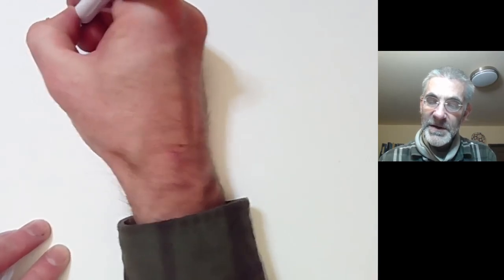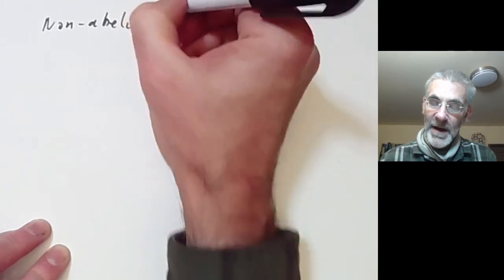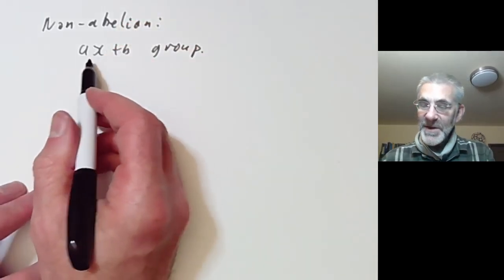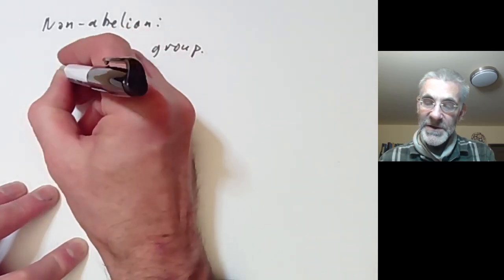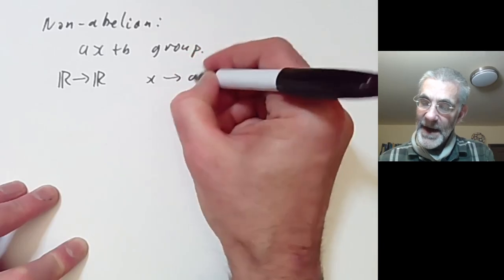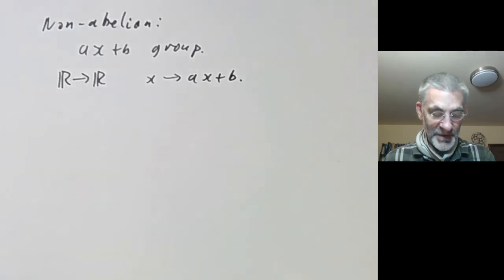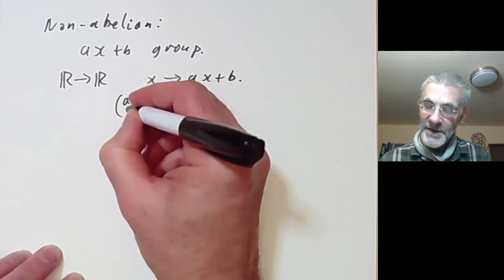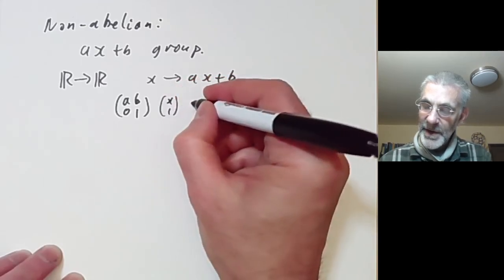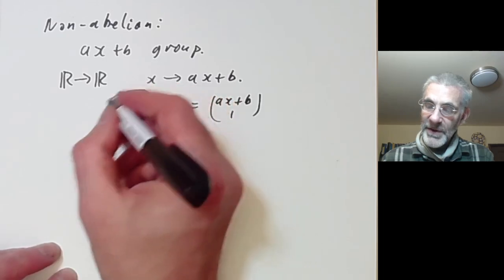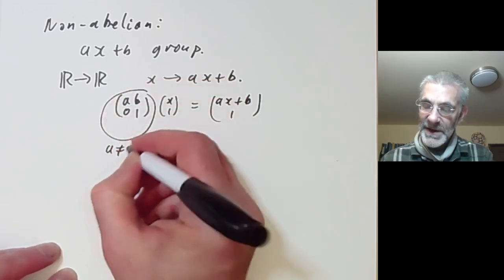So these are abelian groups, and you can ask: are there any non-abelian Lie Groups? In dimension one there aren't, but in dimension two we come across the first non-abelian connected example: the Ax+B group. As the name suggests, this is the group of all linear transformations from R to R taking x to Ax+B — the group of affine transformations of the reals. You can represent this group as matrices of the form [A B; 0 1] acting on [x; 1] to give [Ax+B; 1].